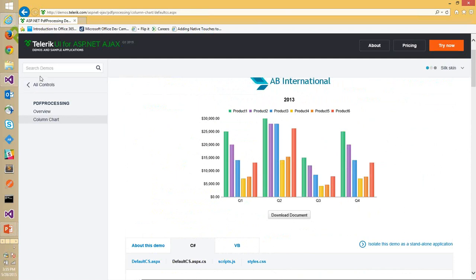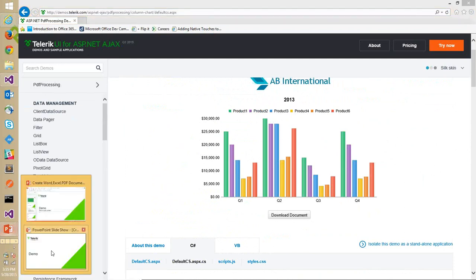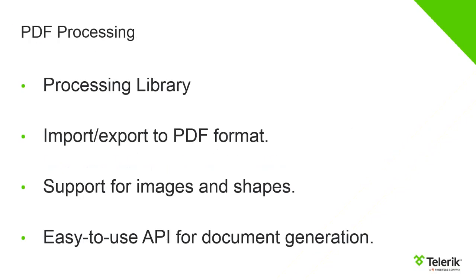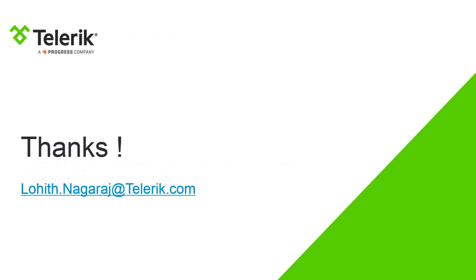So we've seen spreadsheet processing, PDF processing — import/export to PDF format, support for images and shapes, and easy-to-use API for document generation. Today's webinar covered three main topics: if you already have Telerik UI for ASP.NET Ajax, you have wonderful APIs for any document processing requirement. You saw me generate a Word document, an Excel spreadsheet, and a PDF. There are much deeper demos available on our demo site, and when you download our suite you also get these demos to run locally. Thank you all for joining this webinar. We'll stop the recording and continue with Q&A. We look forward to seeing you at future webinars.